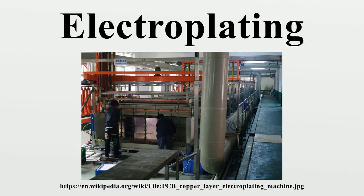One of American physicist Richard Feynman's first projects was to develop technology for electroplating metal onto plastic. Feynman developed the original idea of his friend into a successful invention, allowing his employer to keep commercial promises he had made but could not have fulfilled otherwise.